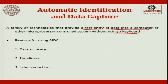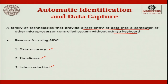The advantages and reasons we use AIDC are: number one, data accuracy; number two, timeliness; and number three, labor reduction. Regarding data accuracy, errors occur in both data collection and data entry. There are certain sources of error when data is handled manually — the average error rate for manual keyboard entry is one error per 300 characters.